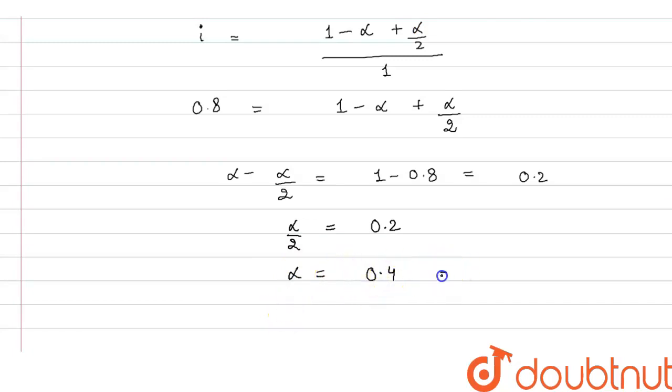We can write it as 0.4 or we can convert it into percentage by multiplying by 100, so it will be equal to 40%. So basically the percentage of dimerization or degree of association is 0.4 or 40%.